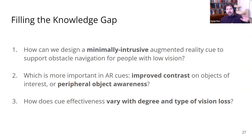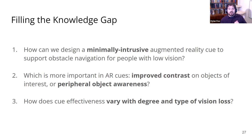There are many more examples we don't have time for today, but the knowledge gap we identified really narrowed down to three things. Number one: how can we design a minimally intrusive augmented reality cue to support obstacle navigation for people with low vision? Number two: which is more important in AR cues — improved contrast on objects of interest or peripheral object awareness? And number three: how does cue effectiveness vary with degree and type of vision loss? Our results today are focused on numbers one and two.